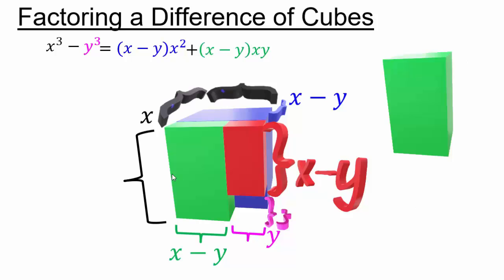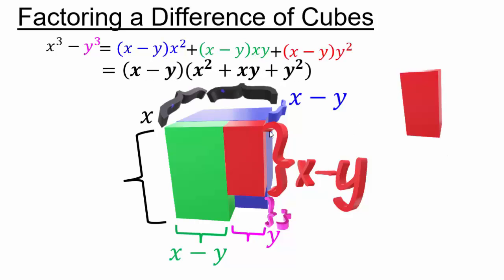So we have three pieces. The blue piece in the back: its width is x minus y, and it's x times x, so x squared times x minus y is its volume. The green piece in front: it's x minus y times x, and the width is just y — the piece from when we removed the y cubed — so that's xy times x minus y. The red last piece: it's x minus y times y squared. Factoring out the greatest common factor x minus y, we get x minus y times x squared plus xy plus y squared.